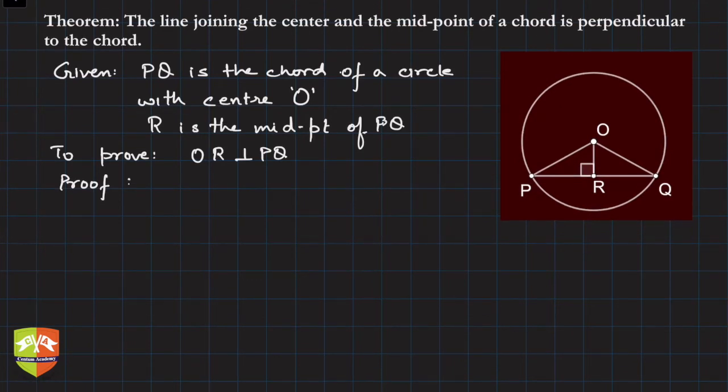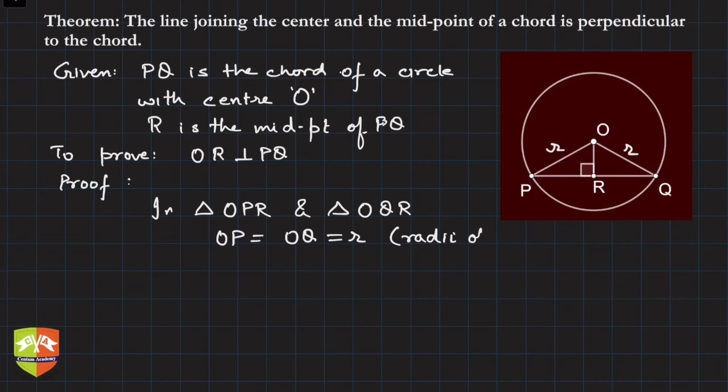So consider triangle OPR and triangle OQR. What do we have? We have OP is equal to OQ, both are equal to radius of the same circle.